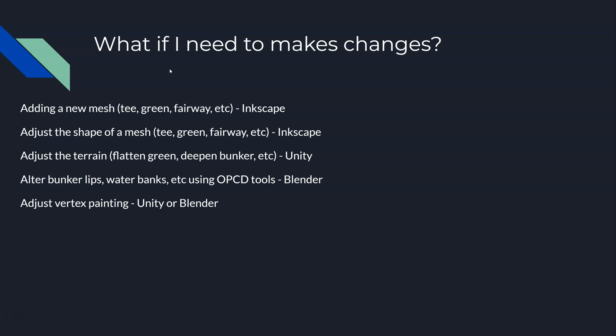What if I need to adjust the terrain? For example, my green is too hilly — you can't putt on it, I need to flatten it. I need to make these bunkers deeper — not the lips, but when I stand in it, it needs to be deeper. Remember, we conformed our meshes to our terrain. So if you need to change that terrain, which ultimately changes the undulation of your meshes, you need to do that in Unity with the terrain shaping tools — either RAM or the native Unity tools.